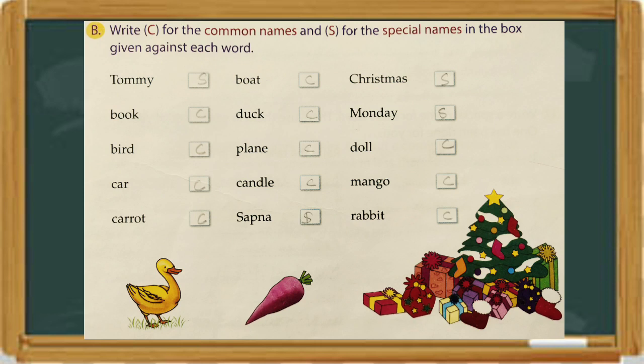Christmas — it is also starting with a capital letter, which means Christmas is a special name, so you will have to write S. Monday is a special name of a week, so you will have to write S. Doll is a common name. Mango is a common name, write C. Rabbit is also a common name, so you will have to write C in this box.